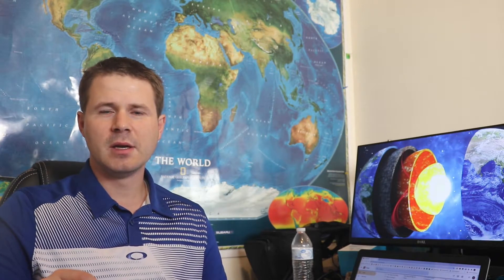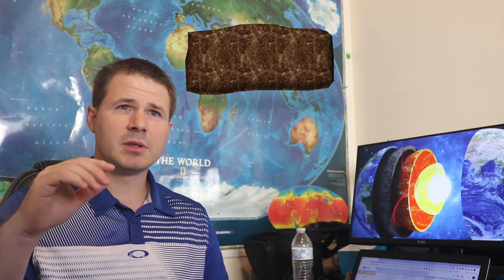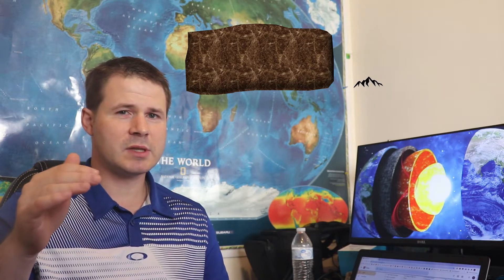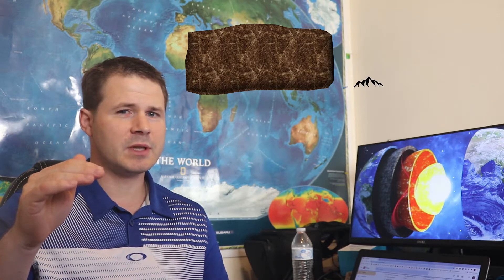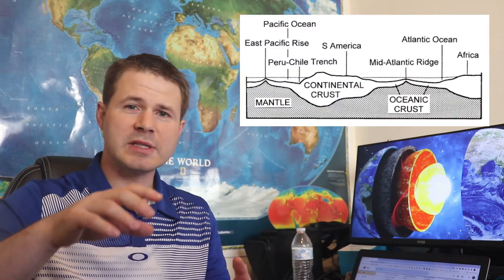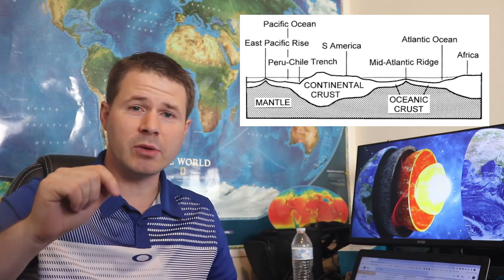If you were quick with your math you just caught on to something. The thickest crust is 43 and a half miles thick, but Mount Everest — the highest mountain — sits at about 29,000 feet, which is only about five and a half miles above sea level. So how can that be? Well, the crust actually sits down into the mantle. It's floating on the mantle but it sticks down into it, just like an iceberg floating on water sticks down into the water.